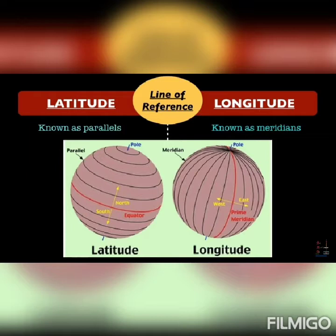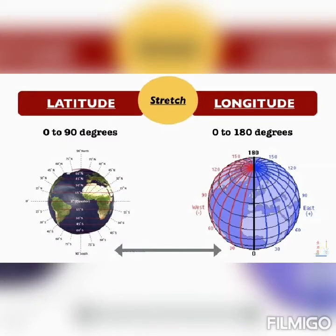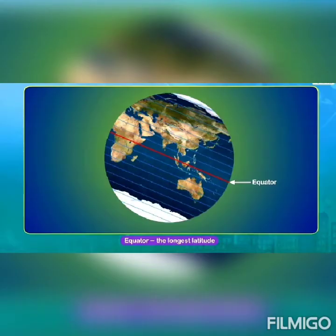Similarly, lines of longitude are imaginary lines which run in a north-south direction from the North Pole to the South Pole. These lines are also known as meridians of longitude. The prime meridian passes through Greenwich, London. As you can see, 0 to 90 degrees is marked as latitude, and 0 to 180 degrees is marked as longitude.